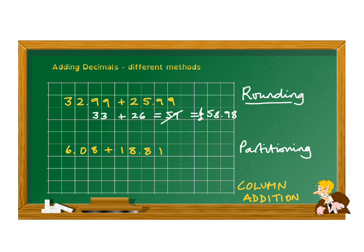6 and 18 we can add up to make 24. Partitioning means taking it apart like this, and then we're going to take the 0.08 and the 0.81 and add those two together.